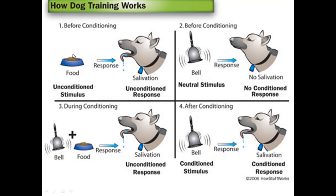To summarise: you have the primary stimulus, which is the food; the secondary stimulus, which is the bell; and the response, which is salivation. In a conditioned response, what's technically happening is the secondary stimulus — the bell — causes the response of salivation, even though the two are not directly linked. There is no reason why the bell should cause salivation in the dog. It is the fact that the dog has learnt that the bell is associated with the primary stimulus, the food, and hence you get a conditioned response — the dog salivates when you ring the bell.